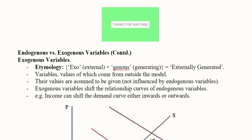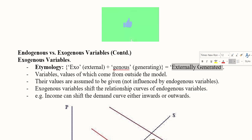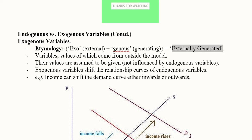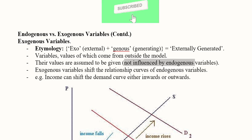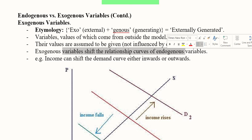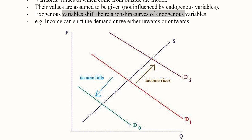Exogenous variables are the other type. 'Exo' means external and 'genus' means generating, so these are externally generated variables. They are outside the model — we cannot calculate them — but they have the ability to influence the endogenous variables, while they themselves are not affected or influenced by the endogenous variables. They tend to shift the curves of the endogenous variables.